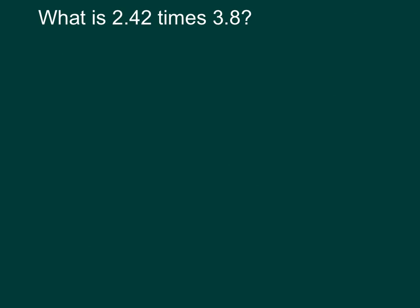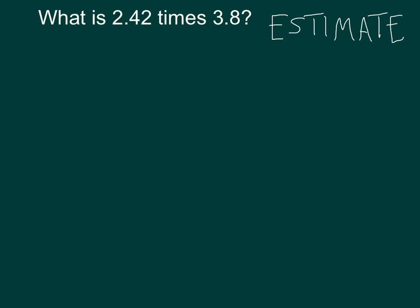Let's do that again. There are my two decimal numbers. Let's estimate. This time, when I estimate, I'm going to estimate each number to the nearest 1. If I look at 2.242 to the nearest 1, that's 2. And 3.8, I would round up to 4. So I've got 2 times 4, which is 8. That's my estimate.